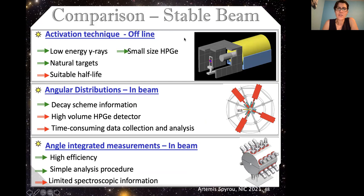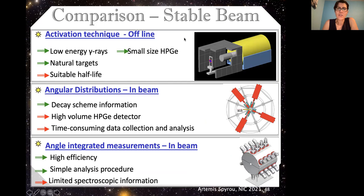So if I put everything together, the activation technique is definitely the most used one, and it's the simplest one. You just need a single detector and that's it. But you cannot apply it to every case. The angular distribution is probably the most complex, but you can apply it to every single case. It's just that it might be more complicated. You have to make sure you're not losing any gamma rays or missing them under the background and so on. And then the angle integrated measurements or summing measurements, this is also in beam with high efficiency, so it's nice and convenient, but you don't get any details because you need typically a large volume detector with not so good resolution.